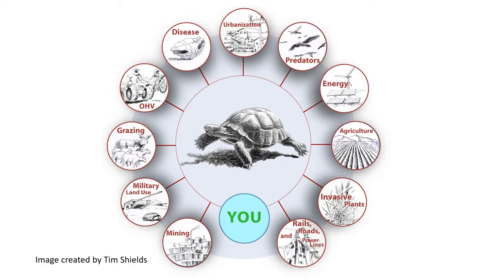This graphic shows all of the different threats that a desert tortoise is up against right now: mining, military land use, grazing, off-highway vehicles, disease, urbanization, predators, energy, agriculture, invasive plants, rails, roads, and power lines. All of these things are working in a tangled web to make life difficult for desert tortoises in various ways, from losing their habitat to taking away their food sources. I'm not going to talk about all of these today, but I'm going to highlight a couple of the key threats facing the tortoise.